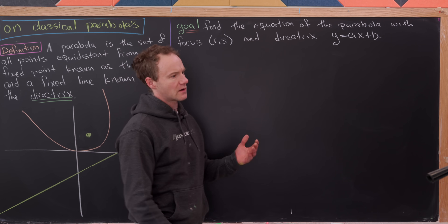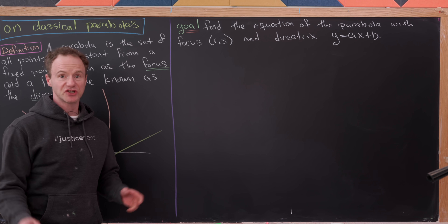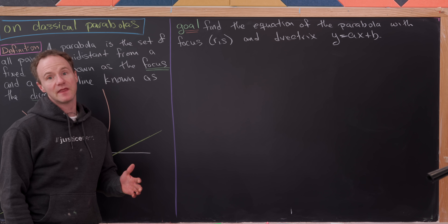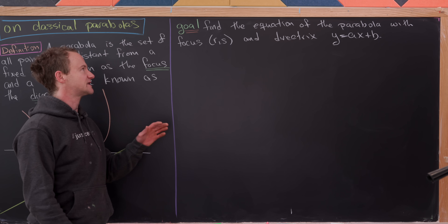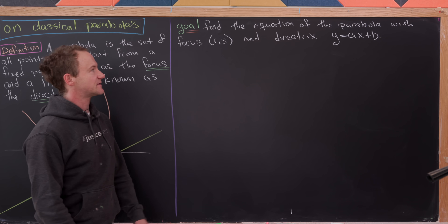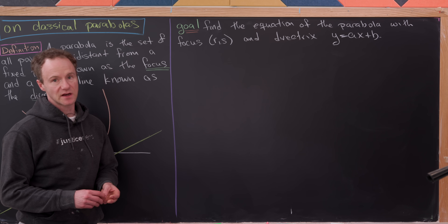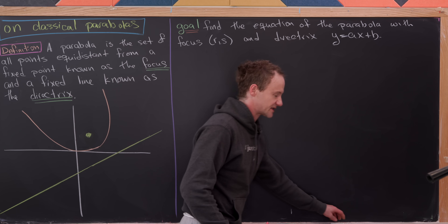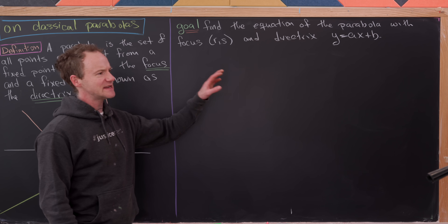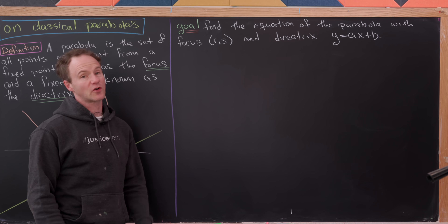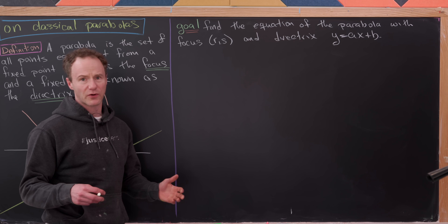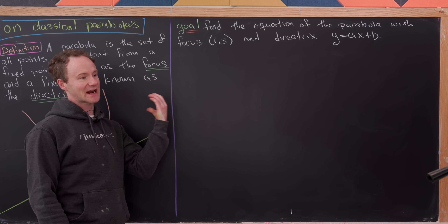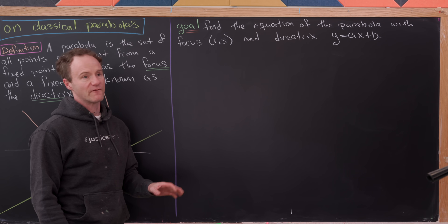Our main goal today is to find the equation of almost the most general parabola — we'll point out how it's not quite the most general, but close. We'd like to find the equation of the parabola with a focus of (r, s) and a directrix of y equals ax plus b. Note that this takes into account almost all lines except vertical lines, so this will produce all parabolas except those opening exactly to the right or left, which have vertical directrices.